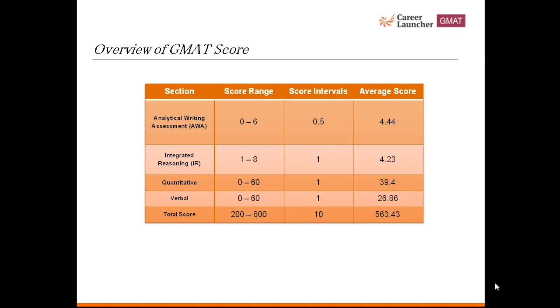IR section is scored on a scale of 1 to 8 with intervals of 1. A score of 6 or above is a very good score in this section. Average score in this section is 4.23.